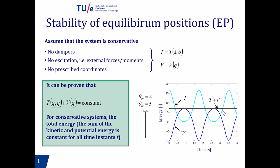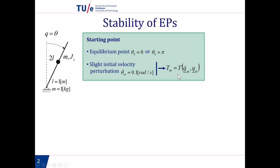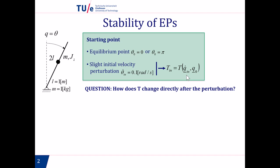Having said this, we can now introduce the idea of stability for a conservative system. Imagine we have an equilibrium position, which is either theta equals zero when the pendulum is up, or theta equals pi when the pendulum is down. And we give a very small initial velocity perturbation, which means we give the system an initial kinetic energy. The question is: given this initial kinetic energy, will the kinetic energy increase or will it decrease?